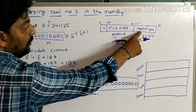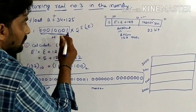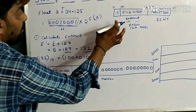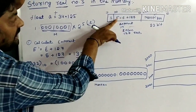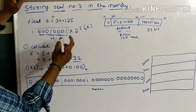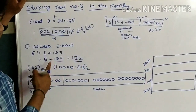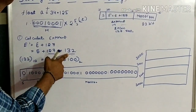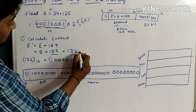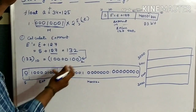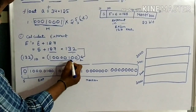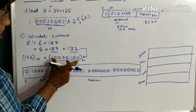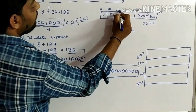We already know the exponent is 5. E dash equals E plus 127, meaning 5 plus 127. Then we convert this into binary form and store it in the exponent field. E equals 5, so substitute 5 in place of E: 5 plus 127 gives us 132. Next, convert 132 into binary — this is the binary form for 132. Then place this binary form in the exponent part of the table.